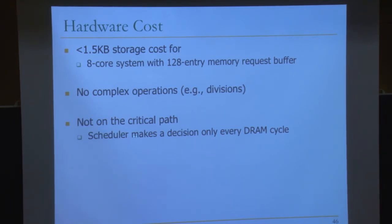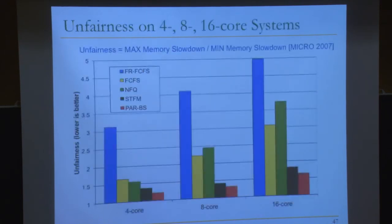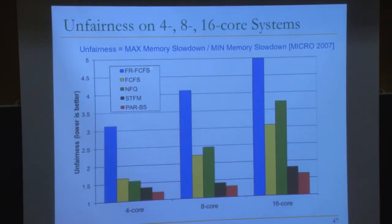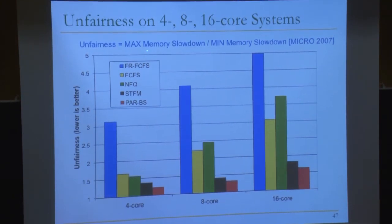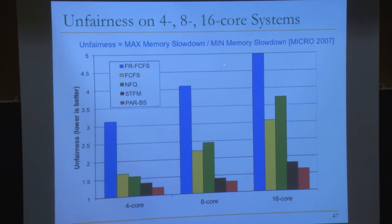ParBS has two upsides: it addresses bank parallelism destruction across multiple threads, and it's a simpler mechanism than STFM. Batching provides fairness and ranking enables parallelism awareness — these are two fundamental substrates for any future memory scheduler design. Operating system schedulers could use similar concepts too.